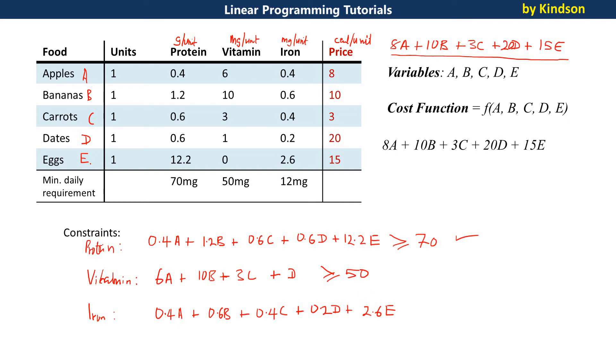This is the constraint. These are the constraints we have for this diet problem. We actually have almost written all the constraints, except that we must have all of A, B, C, D, E, all of them have to be greater than or equal to 0, because you can't eat something negative. So this is the constraint. We've set up everything: the variables, cost function that we need to minimize, and these are our constraints. They are 1, 2, 3, 4 constraints.